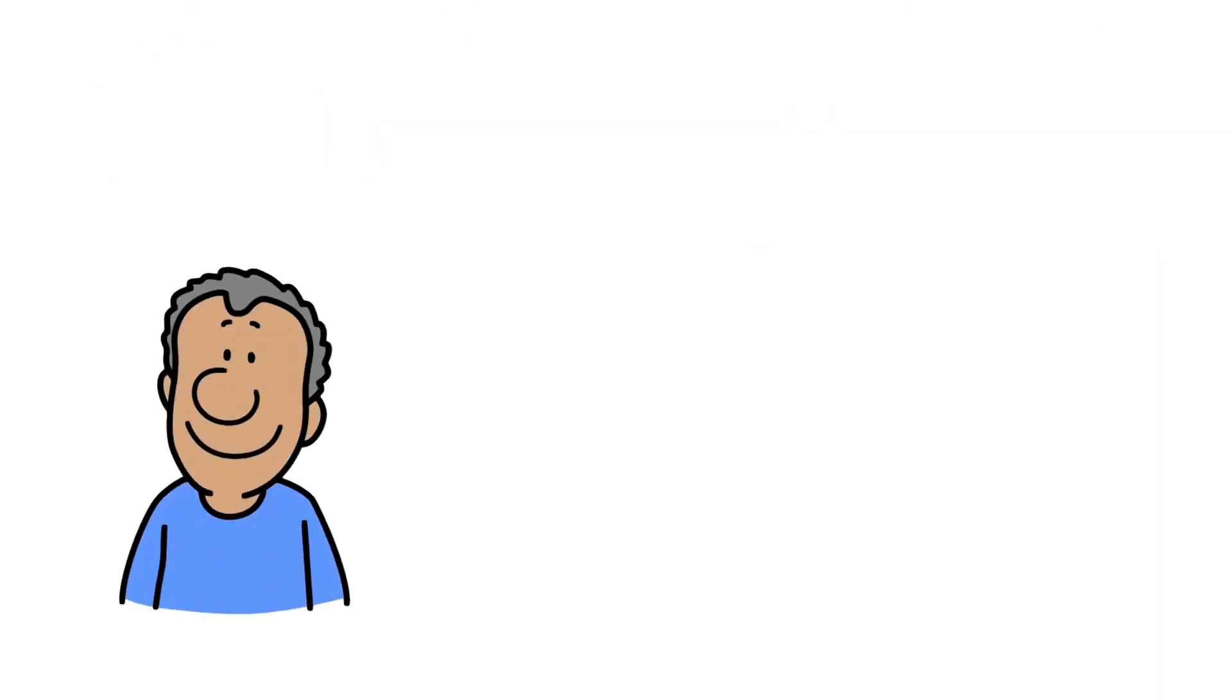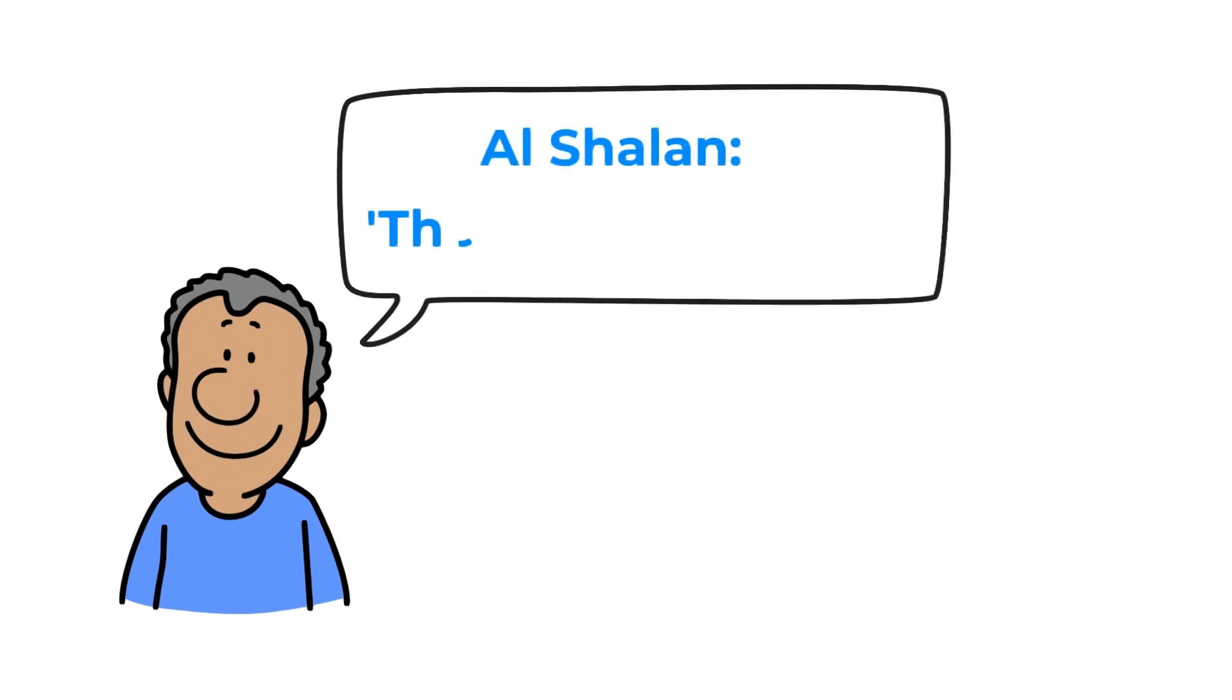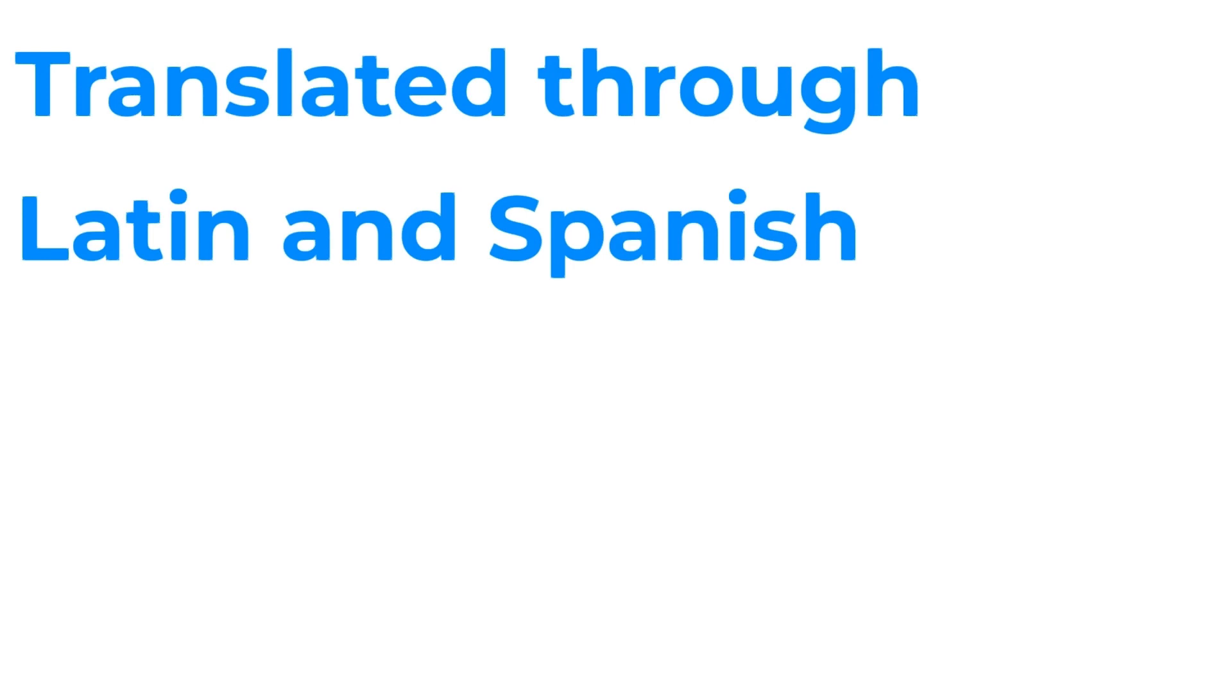Something else which is worth noting is that there is an Arabic word called Al-Shalan, and Al-Shalan is the unknown thing. And so apparently this was translated to chi or ki in Greek, later translated to Latin and Spanish, and which finally arrived at the beautiful letter X, which is the unknown thing that we use today in mathematics.